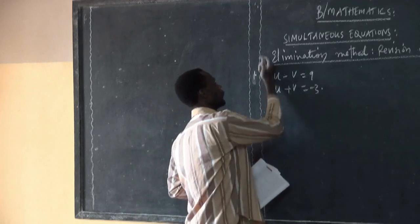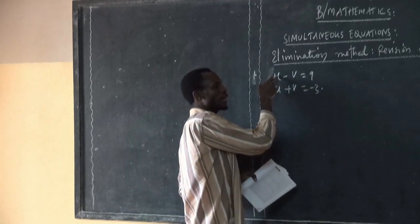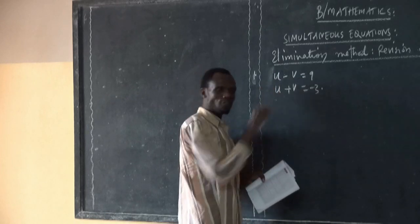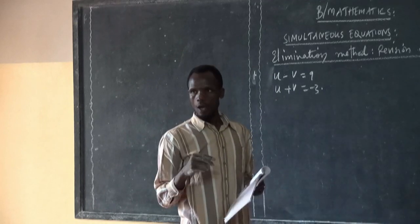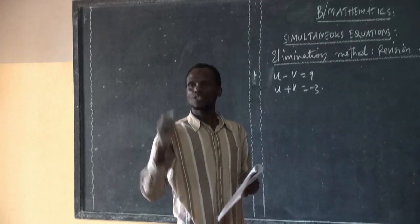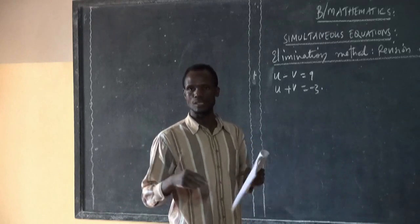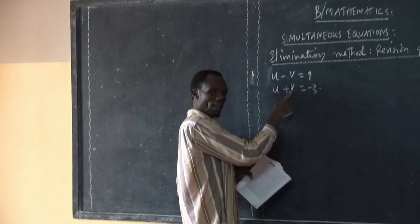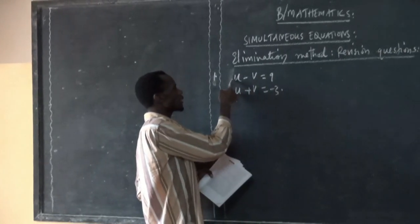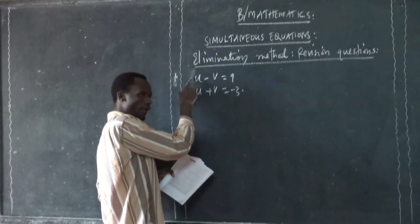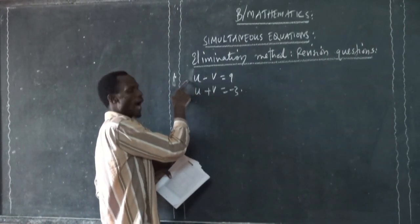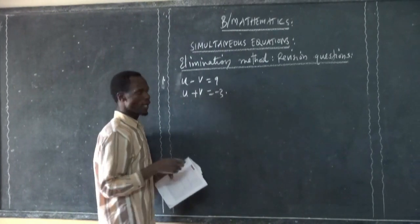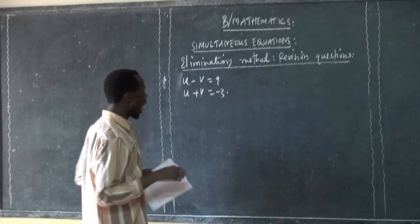If you find between the first equation and the second equation, one of the letters has got the same coefficient with the same integers, you just need to subtract the equations. You can see here, U and U are there, V and V are there. The coefficient of U in the first equation is 1, which is positive, and the coefficient of U in the second equation is 1, which is positive. So we subtract the equations.